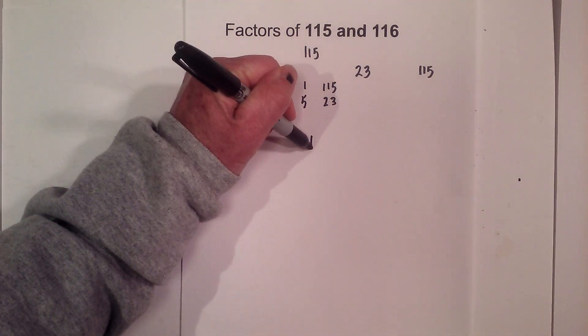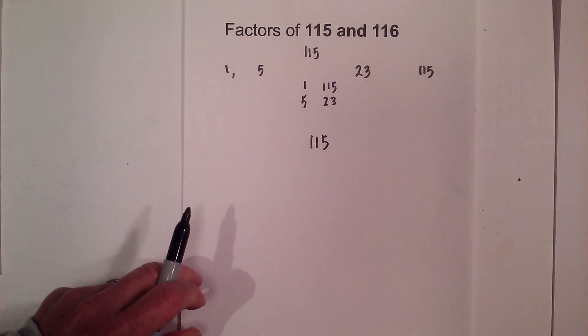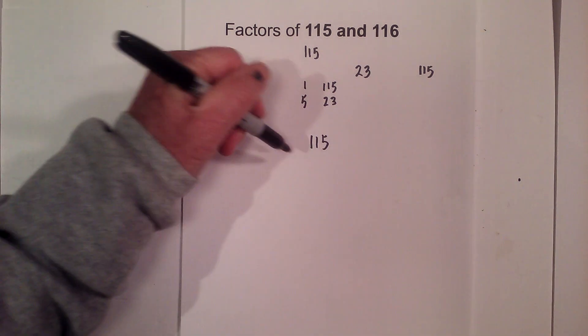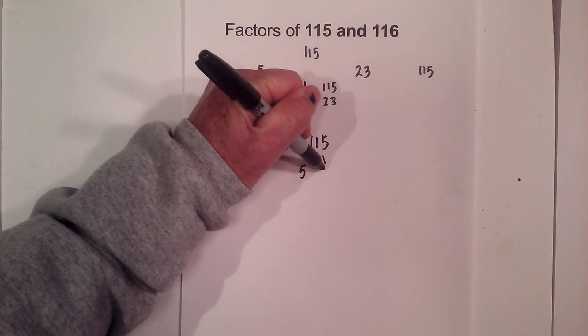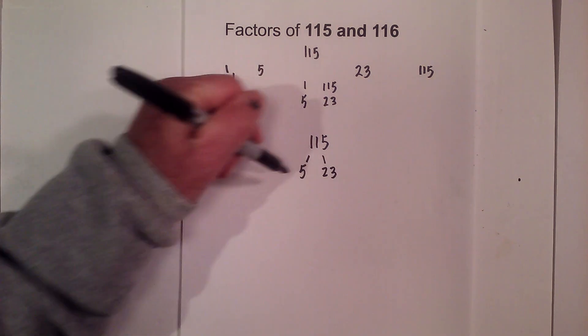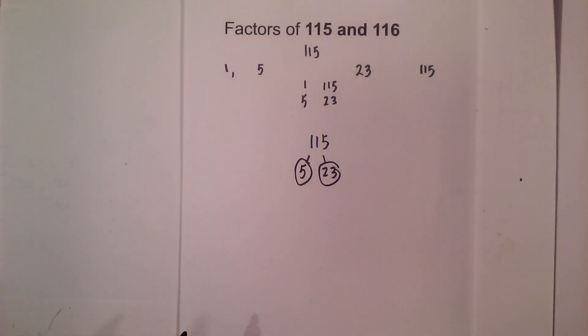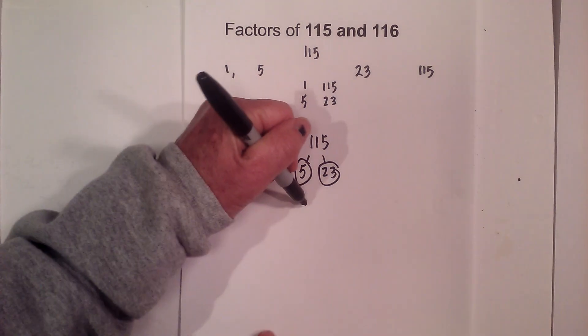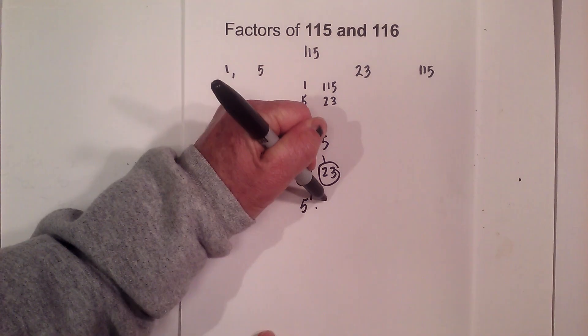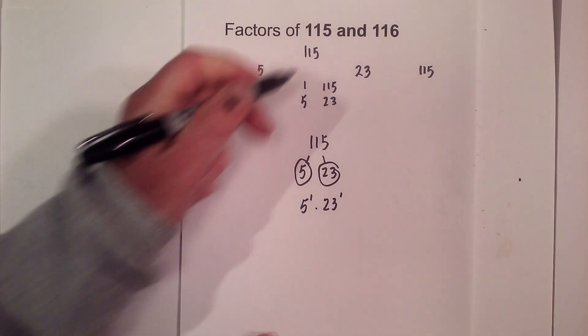Now let's create a factor tree so we can find the prime factorization. You could probably tell by now, 5 times 23 equals 115. Circle both of them because they're both prime, so the prime factorization is 5 to the first times 23 to the first.